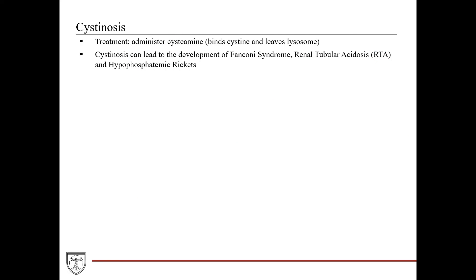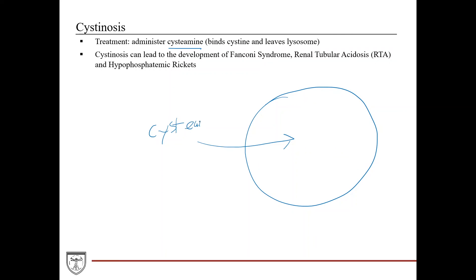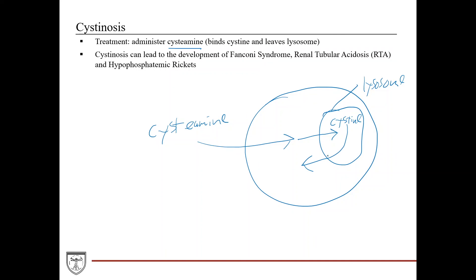Treatment is administration of cysteamine — a molecule that can enter the cell and go into the lysosome to bind cystine. This complex of cysteamine and cystine can then leave the lysosome, preventing accumulation of cystine. Cystinosis can lead to the development of Fanconi syndrome, renal tubular acidosis, and hypophosphatemic rickets.